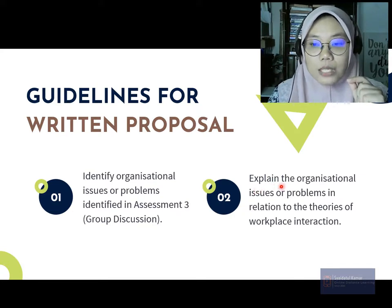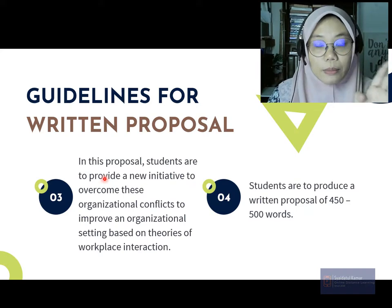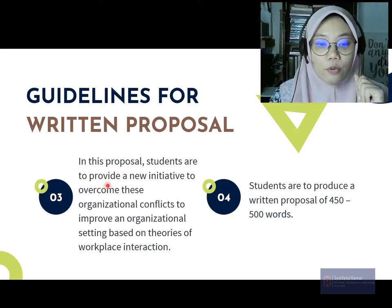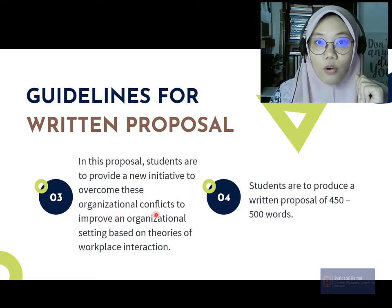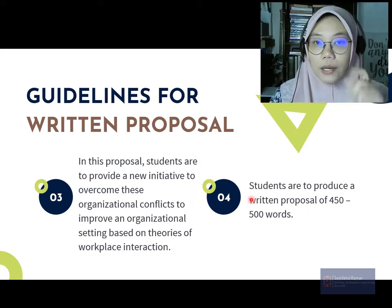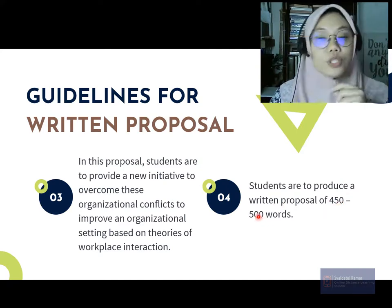Next, you have to explain the organizational issues or problems in relation to the theories of workplace interaction. Then in step three, you have to provide a new initiative to overcome these organizational conflicts and improve the organizational setting based on the theories of workplace interaction. Finally, you have to produce a written proposal of 450 to 500 words.